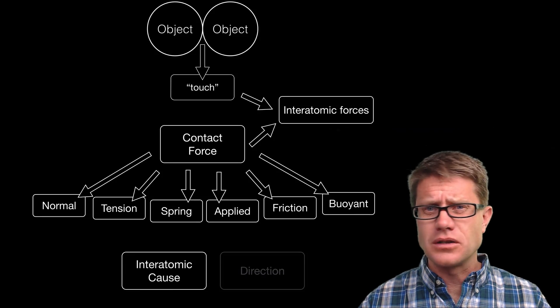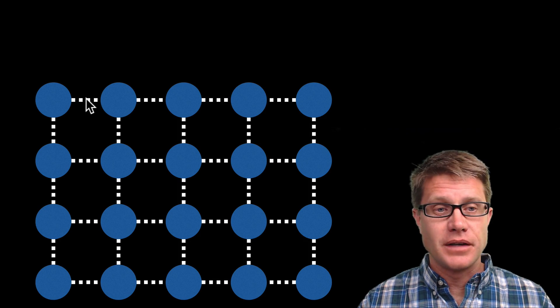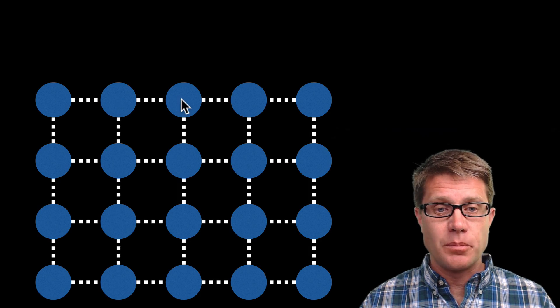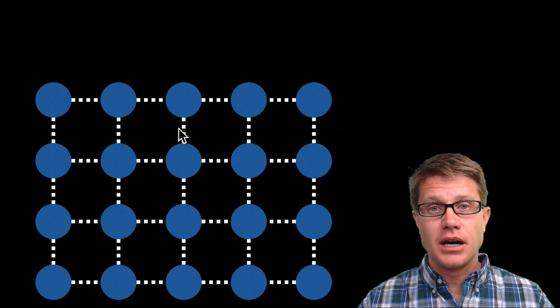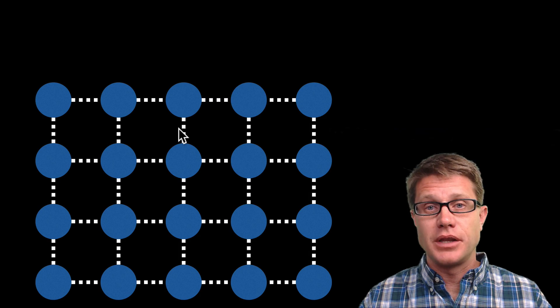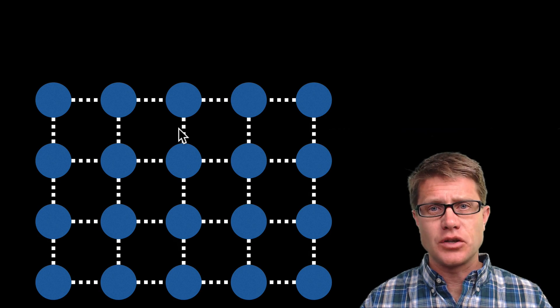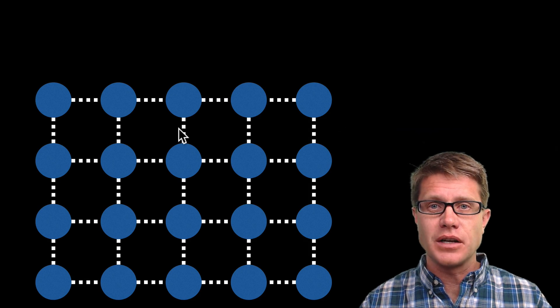So this is a model that makes sense to me. Each of these blue spheres represents an atom. And then these dotted lines represent bonds or chemical bonds between the atoms. But think of them almost like springs that are connecting all these atoms together.